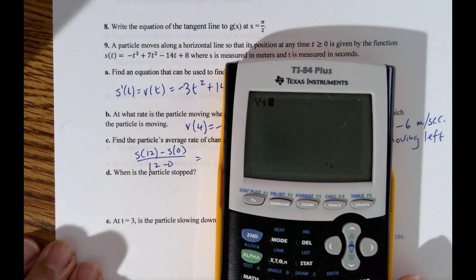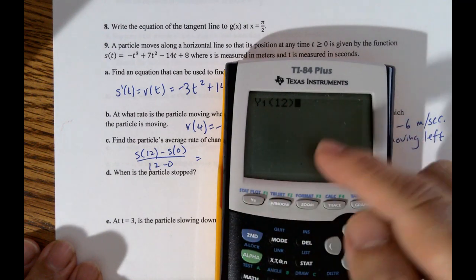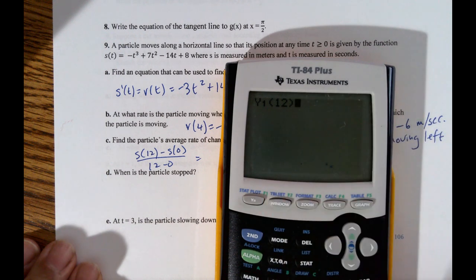And this recognizes functional notation. So use parentheses and then 12. So this is not y1 times 12. This is plug 12 into y1. And that gives me negative 880.